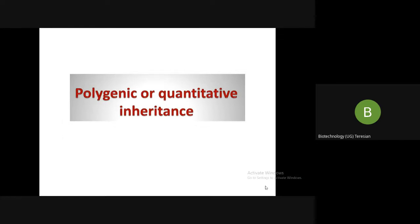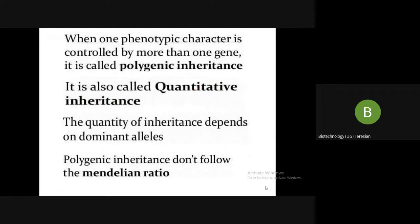Polygenic or quantitative inheritance. A polygenic trait is a trait that is controlled by a group of non-allelic genes. All polygenes can be found in the individual. In polygenes, many genes control a single trait, and environmental features have a higher influence in the determination of a trait. They are located at different loci of non-homologous chromosomes. This is the definition of polygenic inheritance.